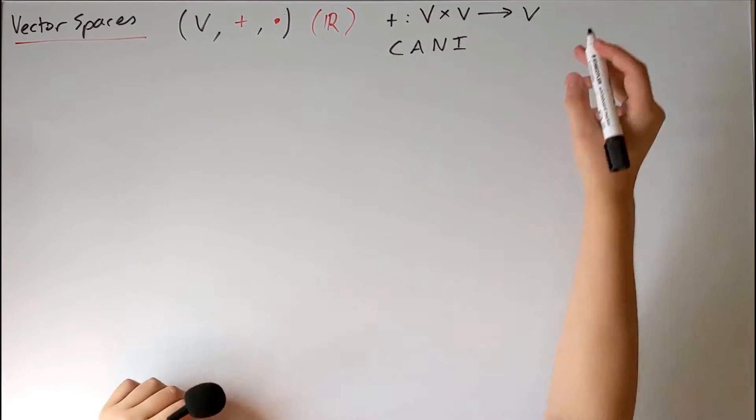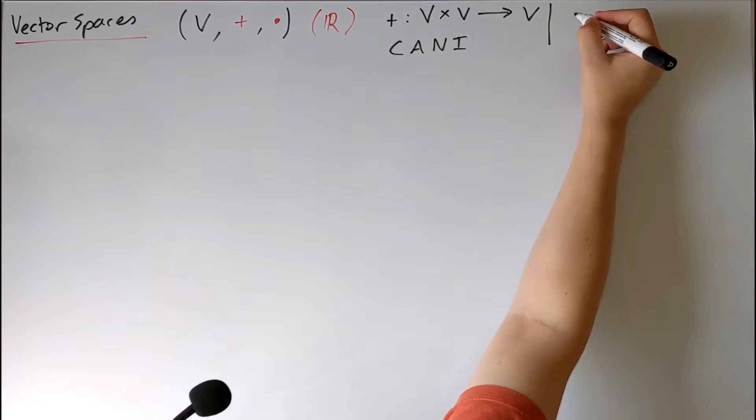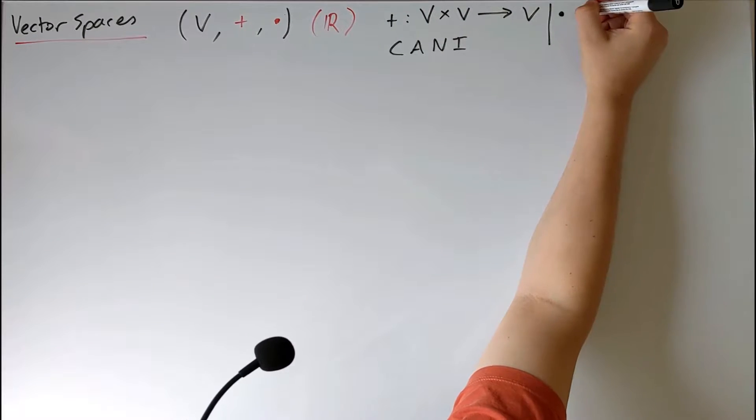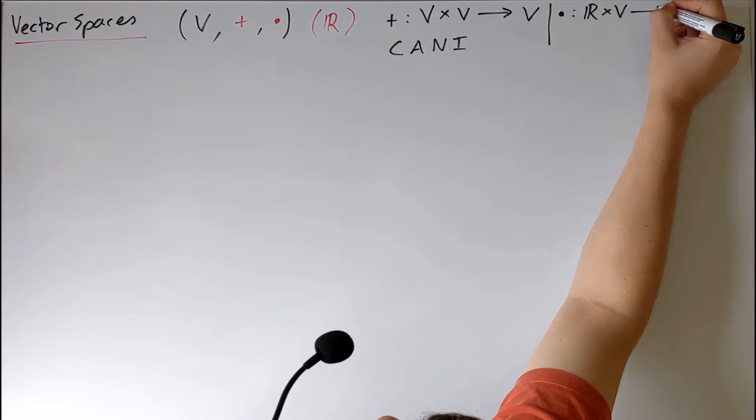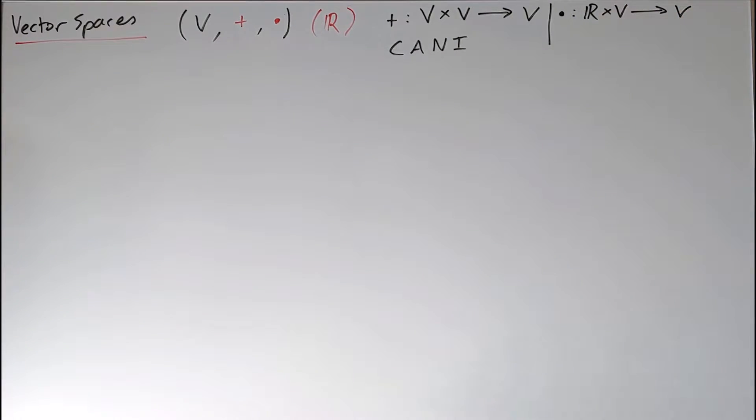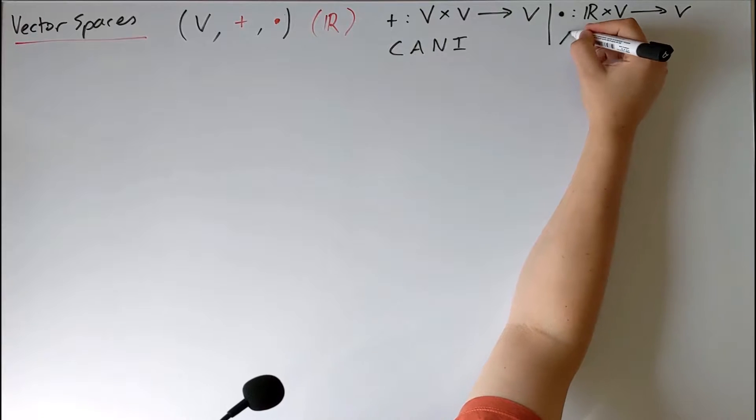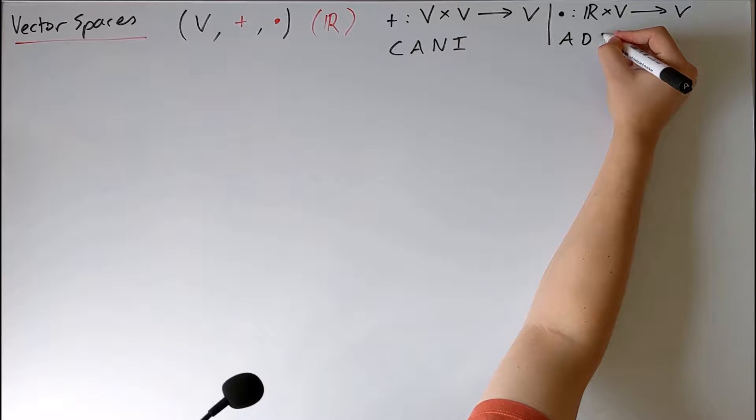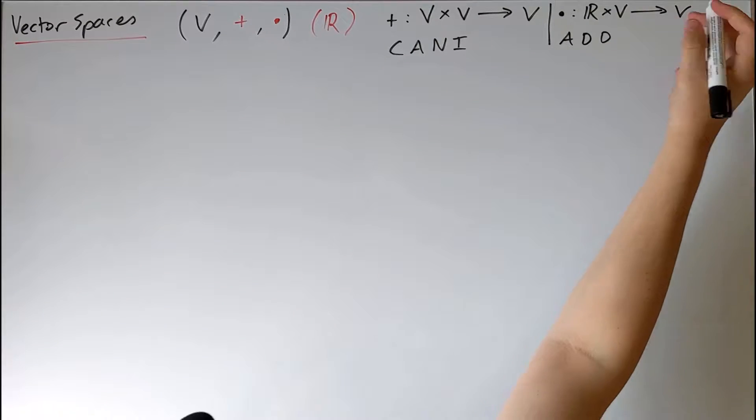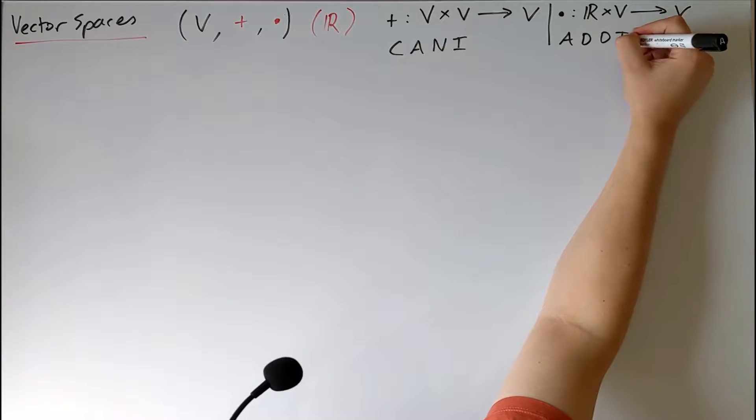And then similarly, we had scalar multiplication, which takes a field element and a vector and gives you another vector. We saw that this had to satisfy associativity, distributivity, another distributivity law, and then the existence of an identity scalar.